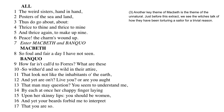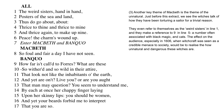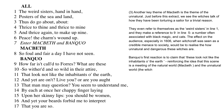Another key theme of Macbeth is the theme of the unnatural. Just before this extract, we see the witches talk of how they've been torturing a sailor for trivial reasons. They refer to themselves as the 'weird sisters' in line 1, and make a reference to the number 9 in line 5 — a number often associated with black magic. The effect on the audience, especially in 1606 when witchcraft was seen as a credible menace to society, would be to realise how unnatural and dangerous these witches are. Banquo's first reaction is to claim that these witches 'look not like the inhabitants of the earth,' reinforcing the idea that this scene is a meeting of the natural world — Macbeth and Banquo — and the unnatural world — the witches.